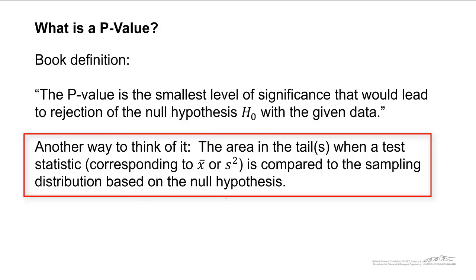Another way to think of a p-value is it's the area in the tail or tails - tail for one-sided test, tails for two-sided test - when a test statistic is compared to the sampling distribution based on the null hypothesis.